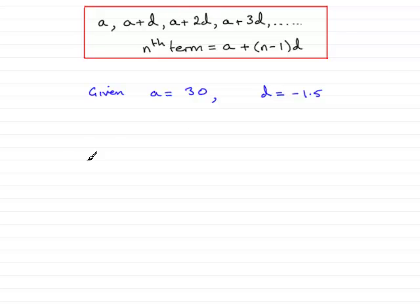So without further ado, if we're asked to find the 25th term we'll just put the 25th term up here and this is found when n is 25. So when n is 25 we've got a which is 30 plus n minus 1, so that's 25 minus 1, multiplied by the common difference minus 1.5.